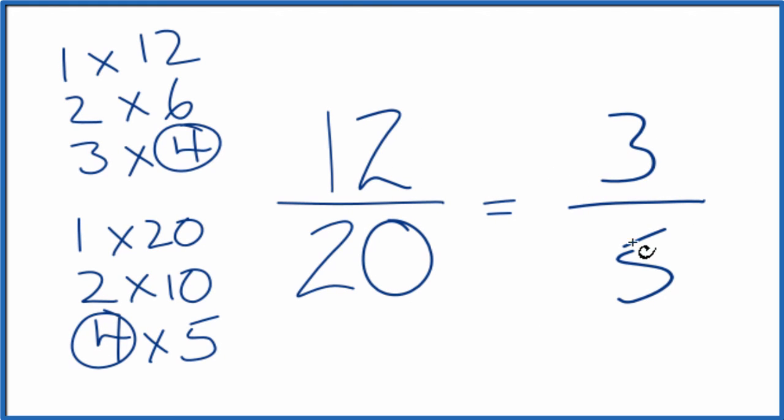And these are equivalent fractions. They have the same value. If you divide 12 by 20, you divide 3 by 5, you'll get the same number.